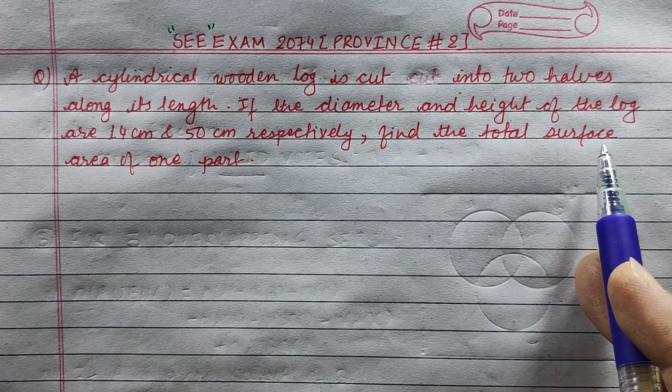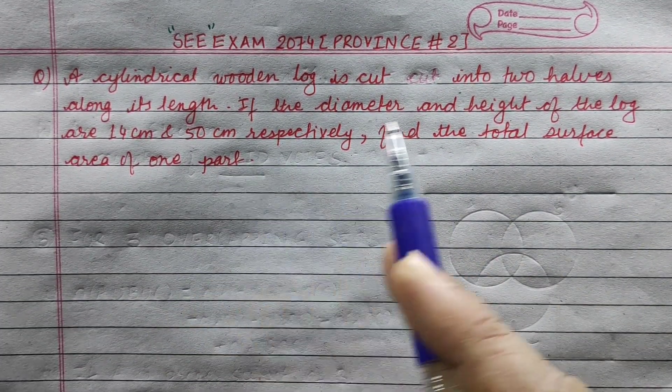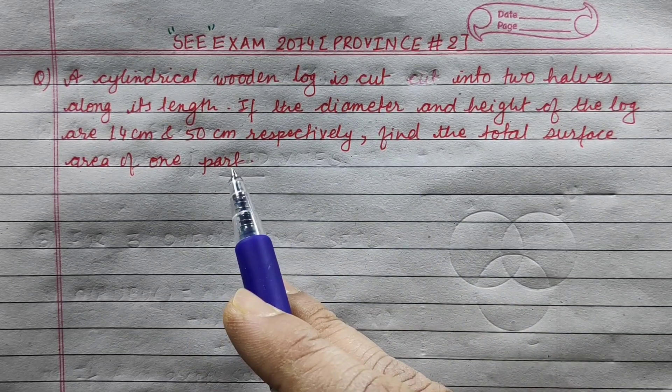find the total surface area of one part. When cut into two halves, we need the total surface area of one half.